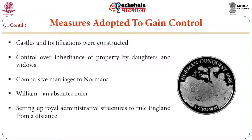Control over inheritance of property by daughters and widows was enforced. New law terms and law practices came into England. Compulsive marriages to Normans were another strategic adaptation. William was an absolute ruler, and as a ruler in absentia he set up royal administrative structures to rule England from a distance, because England was dominated by France, which was far away. Some machinery was rebuilt and reconstructed in order to execute power and control in the British island.